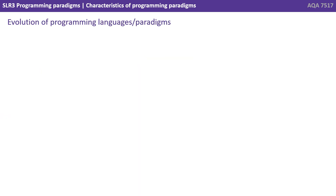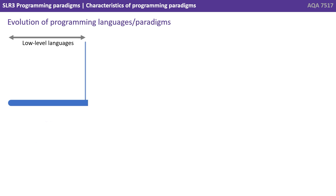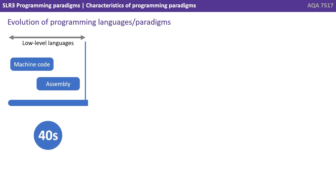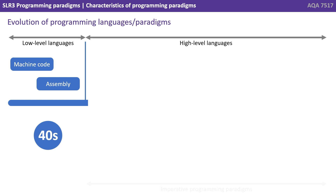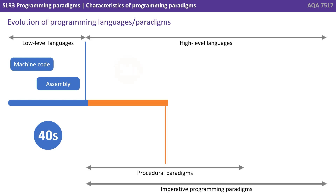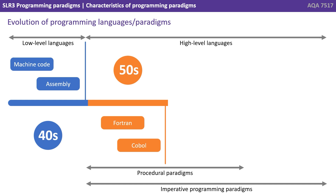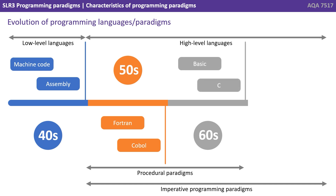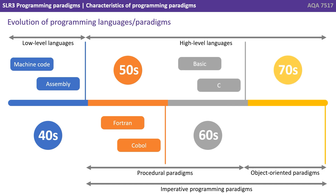We show you here a quick visualisation of the evolution of programming languages and their paradigms. Starting on the far left we have the early days low level languages with machine code and assembly. Coming into the 50s we had our very first ever high level languages in Fortran, quickly followed by COBOL. Languages such as BASIC and C started in the 60s, and in the 70s we had an explosion of languages — C++, C Sharp, Java and every other language we know today.